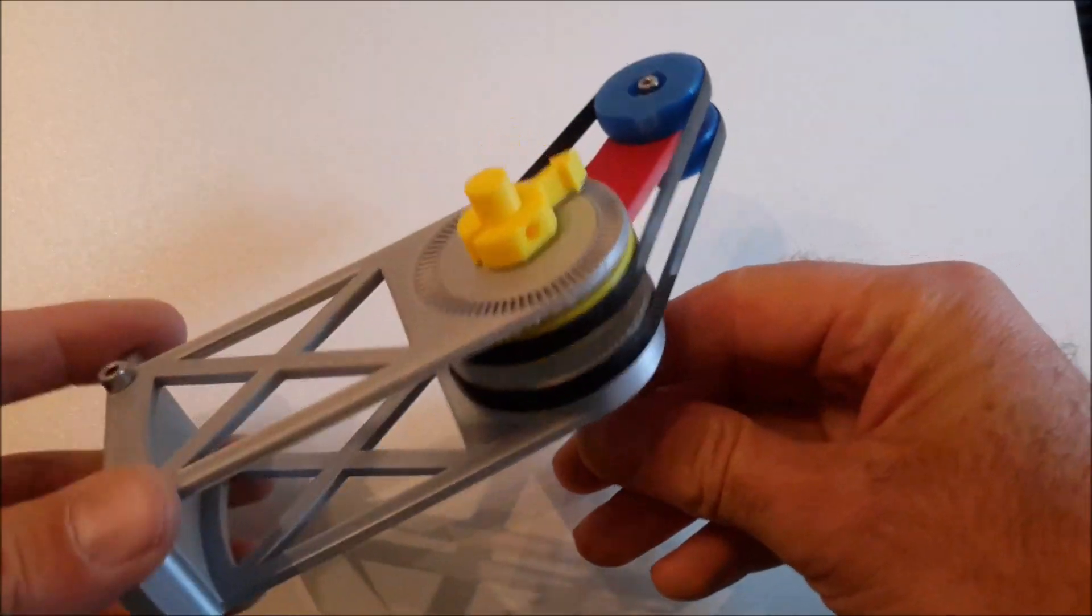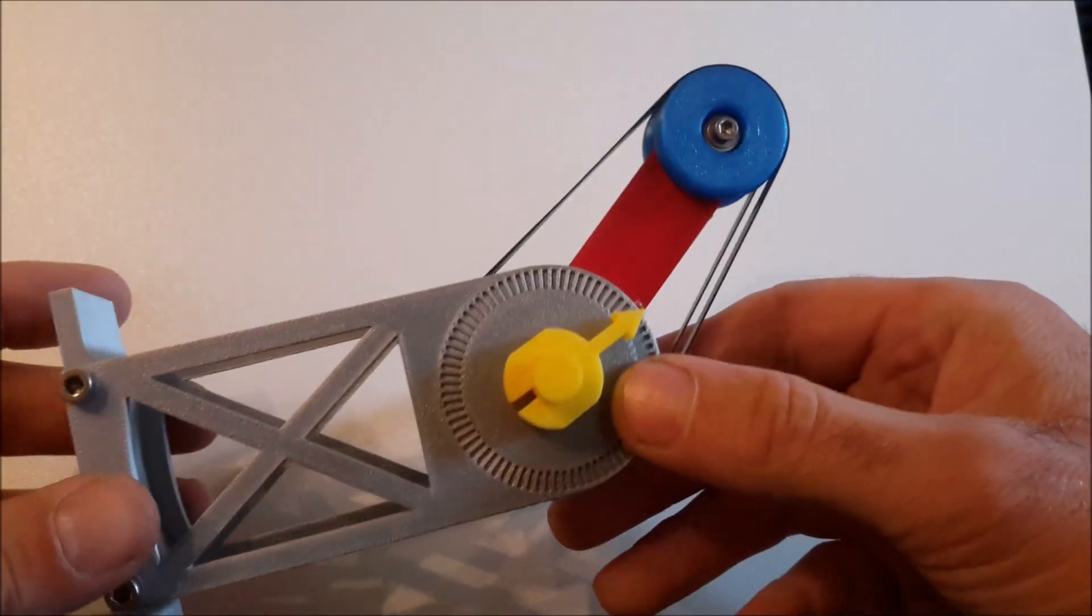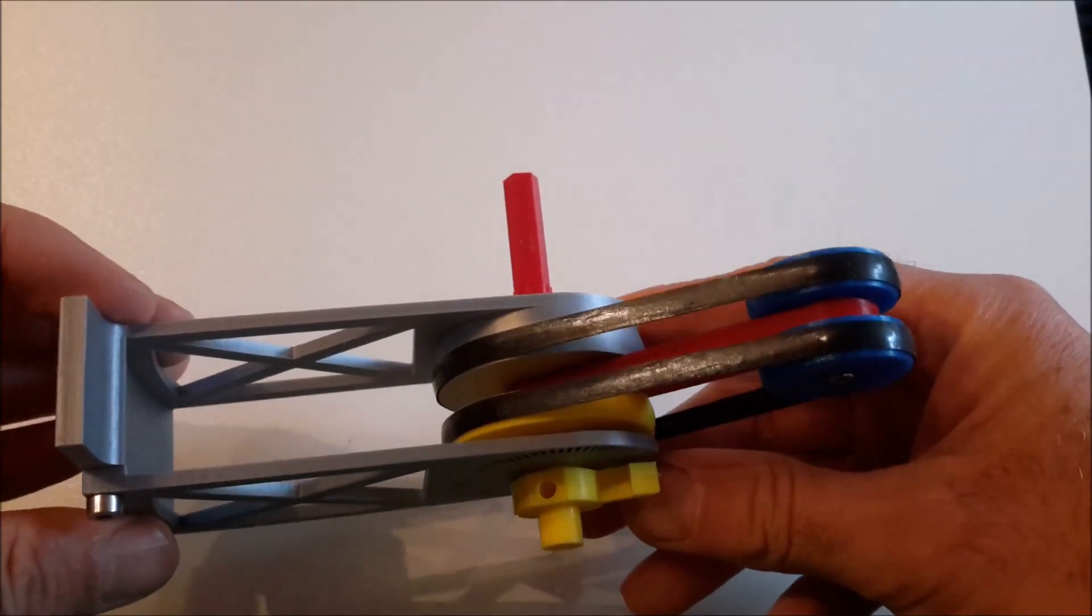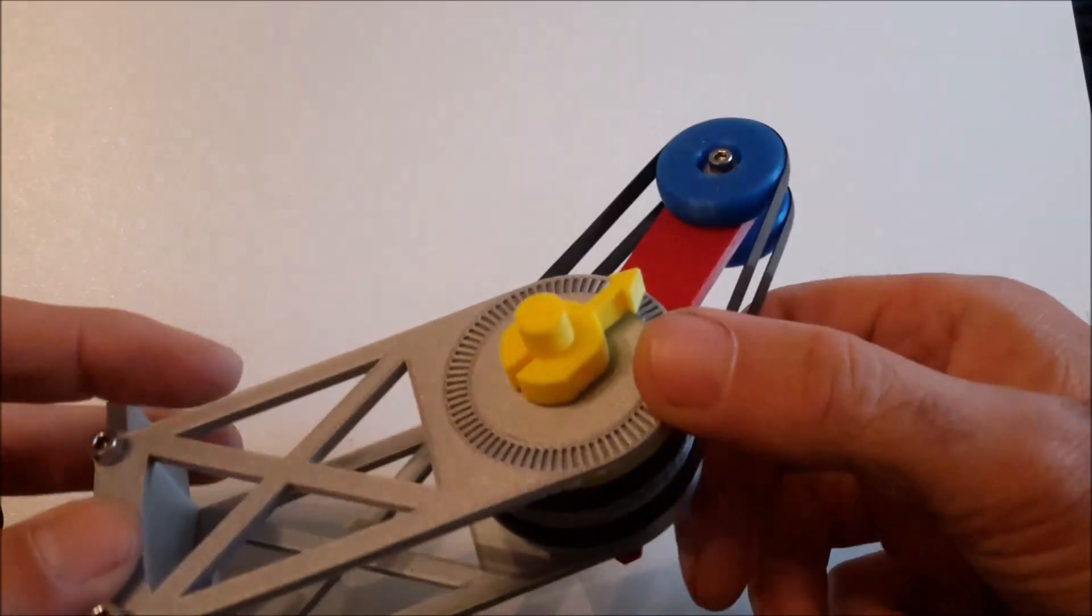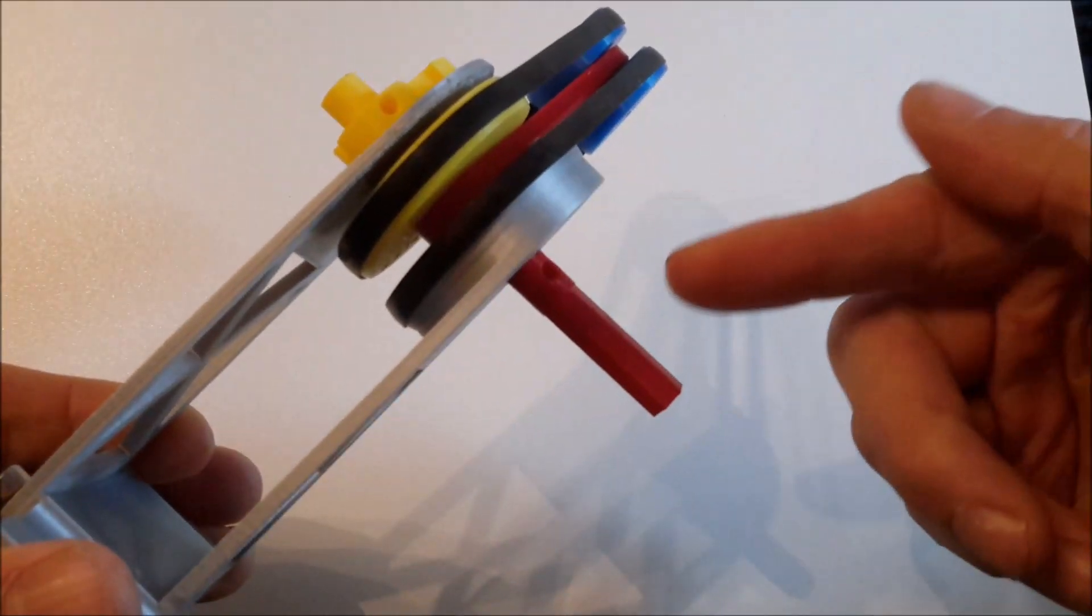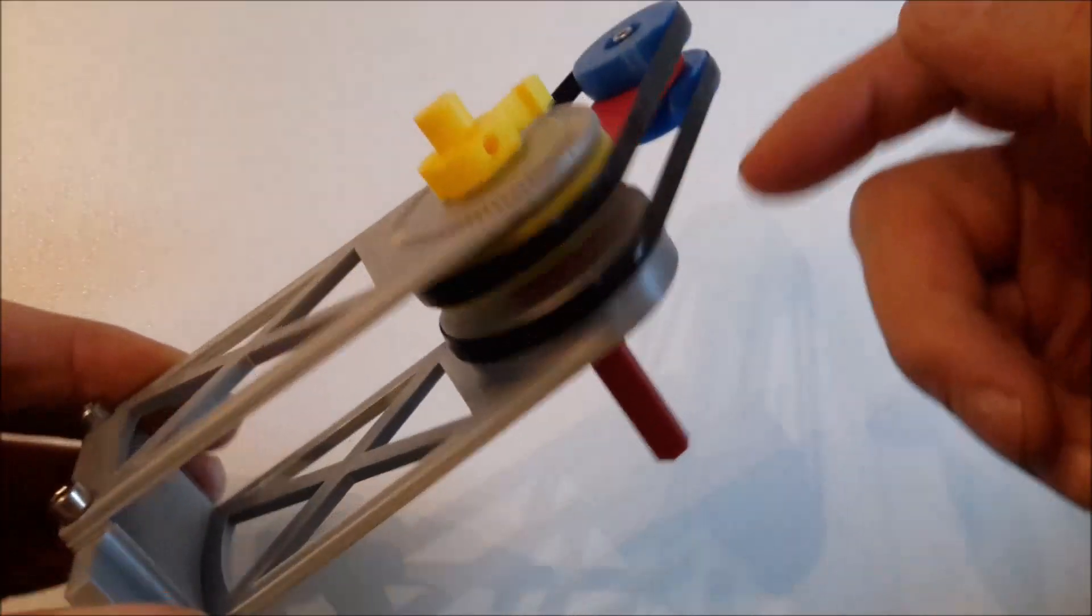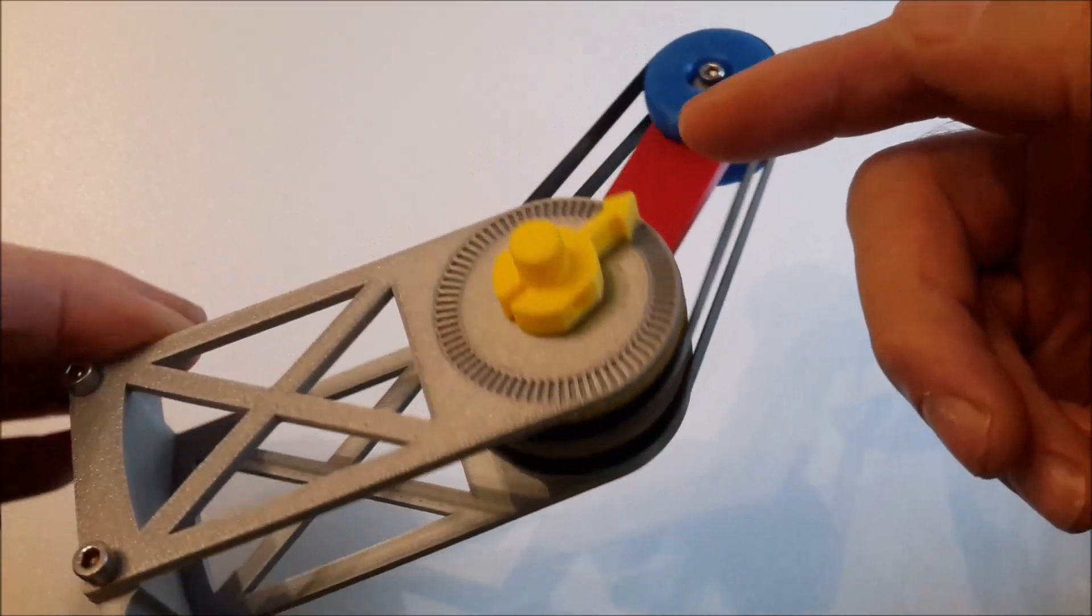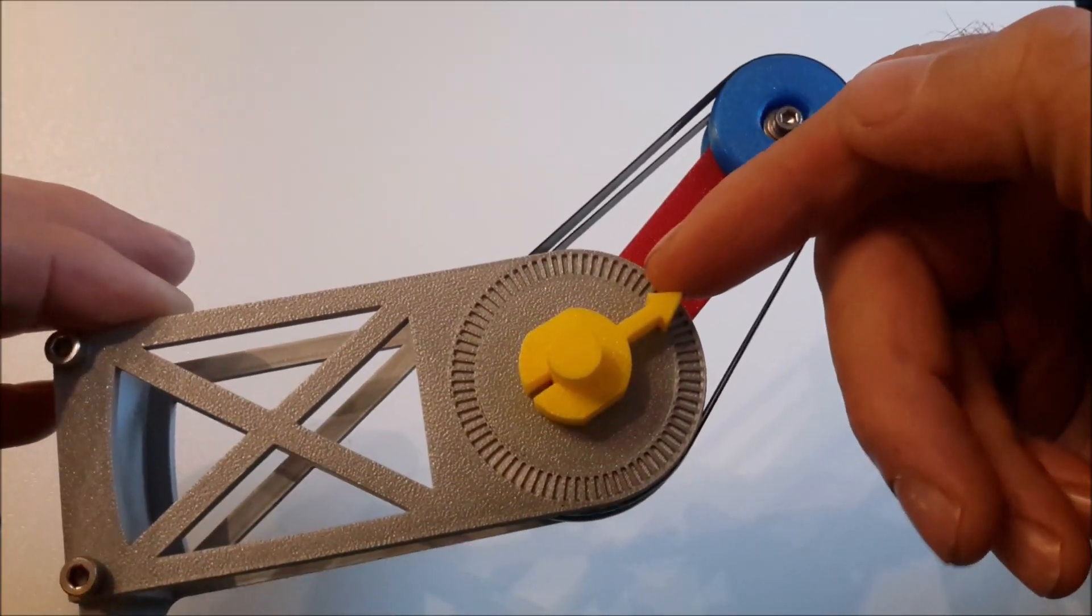This is a transmission with a ratio from 1 to infinity. Let me explain what I mean with this. This shaft here is an input shaft and this is an output shaft. There's a little arrow. This indicates how this shaft is moving.